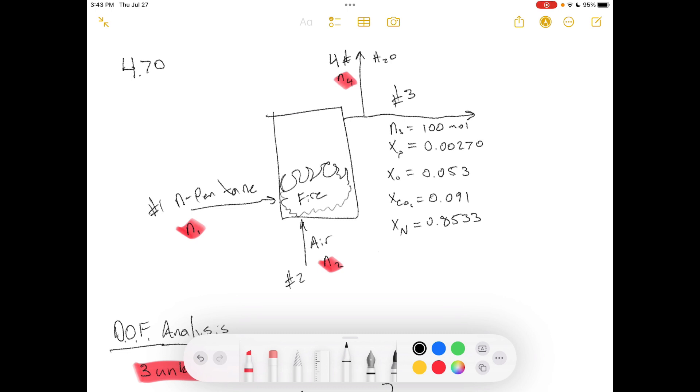So sit back, grab a notebook, and let's dive into today's problem. Today, we're working on problem number 4.70 from Elementary Principles of Chemical Processes 3rd Edition.